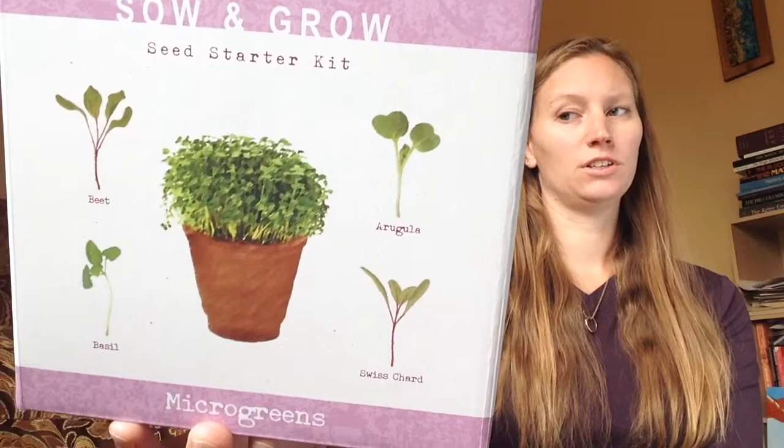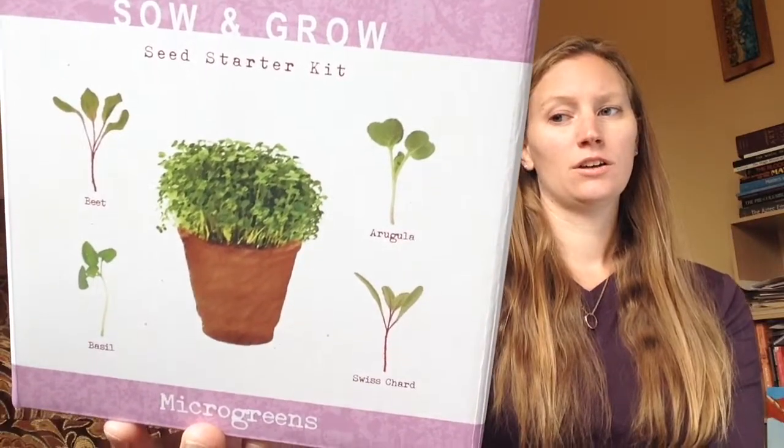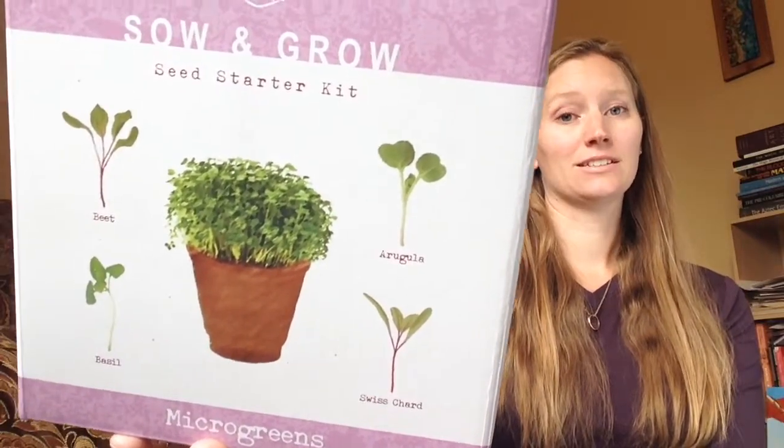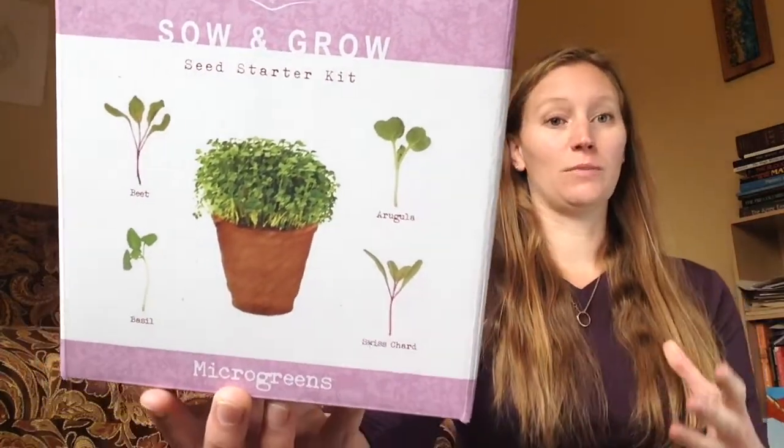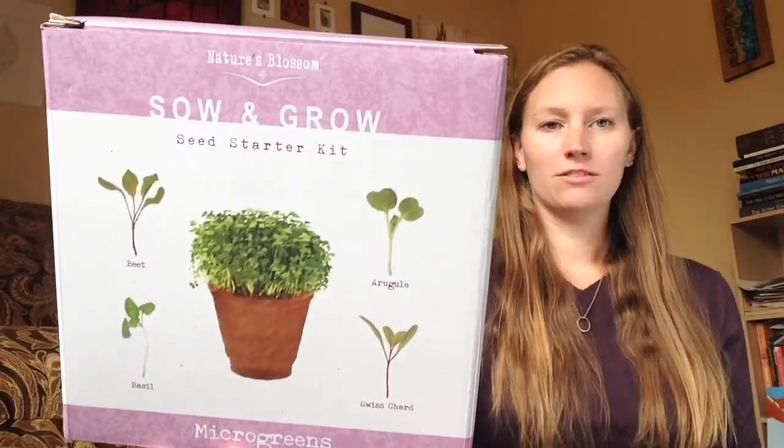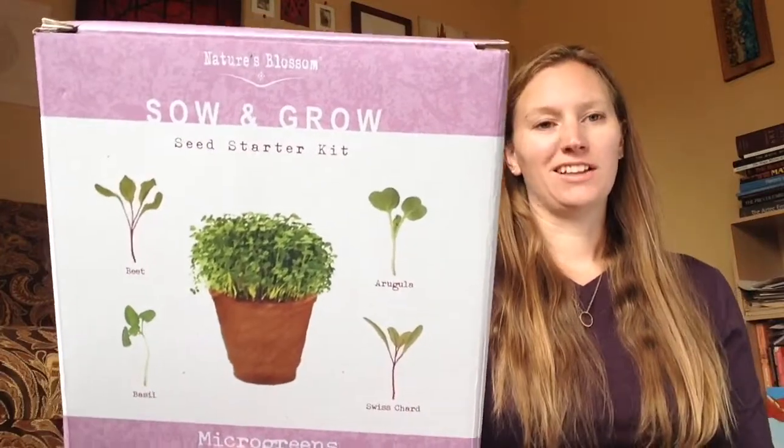It's got arugula, chard, basil, and beets. You're going to pick them before they get big, so microgreens. They're the small veggies that can be like leaves in a salad.